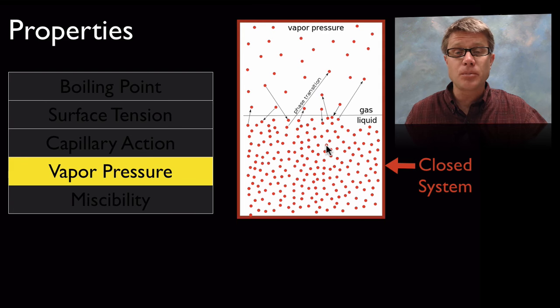Next is vapor pressure. Vapor pressure is measured in a closed system. If we put a liquid in a closed system, it's going to be the amount of pressure exerted by the gases. How are we going to get more gases there? They're going to jump from liquid to a gas stage.